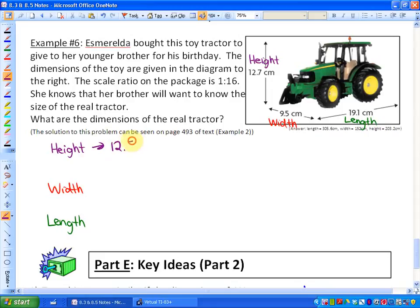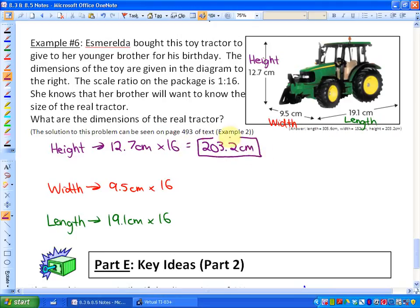It's a pretty straightforward calculation. Just make sure that you realize the units stay the same. You're just going to take all of these dimensions and realize that the actual tractor is 16 times larger. So if I multiply all of these by 16, I will get the answer. The height would be 203.2 centimeters, the width of the real tractor would be 152 centimeters, and the length of the real tractor would be 305.6 centimeters.